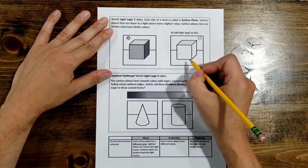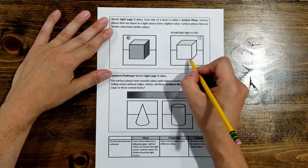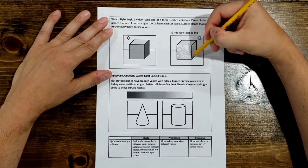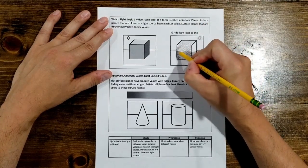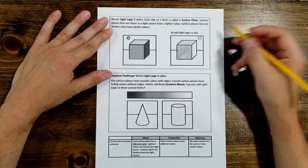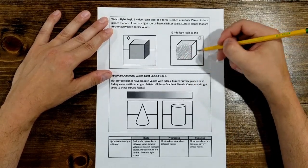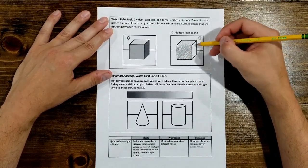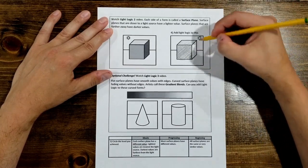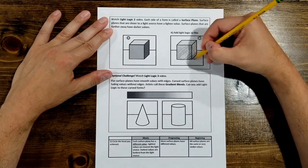Then the side, the surface plane that's furthest away from the sun is going to get the darkest value. So I'll do some darker cross hatching here. And this plane is kind of in between the farthest and the nearest, so it's going to get more of a medium value. Again, cross hatching.